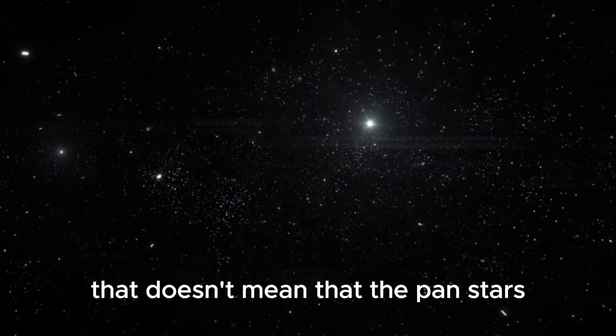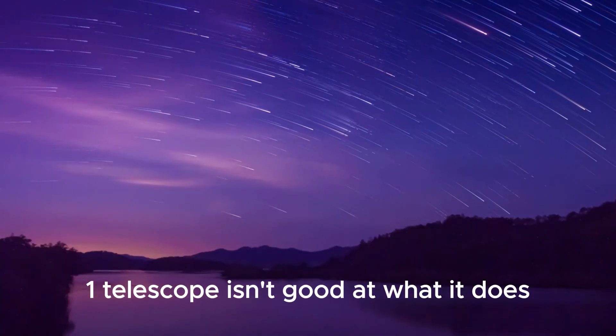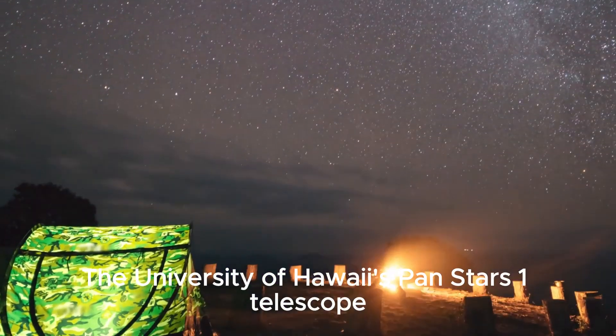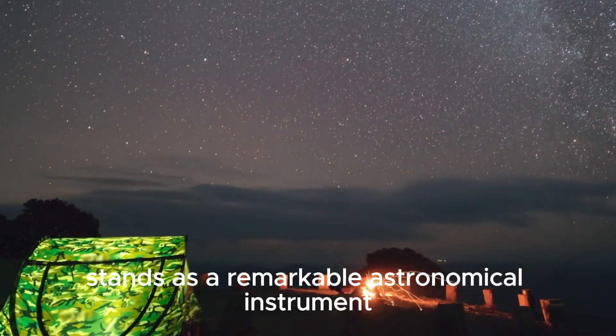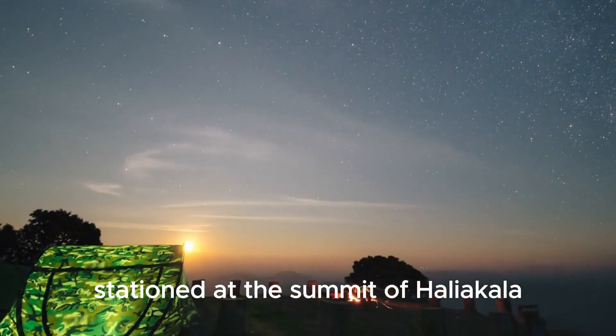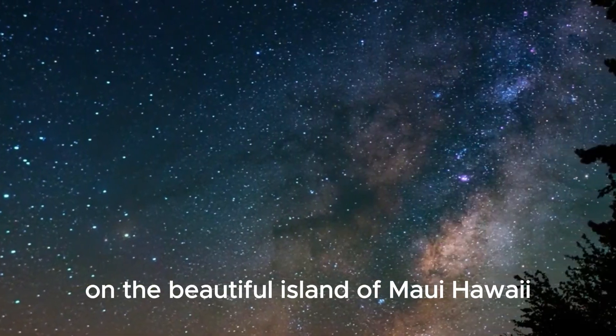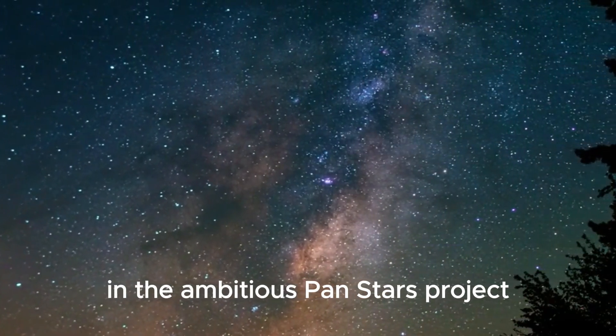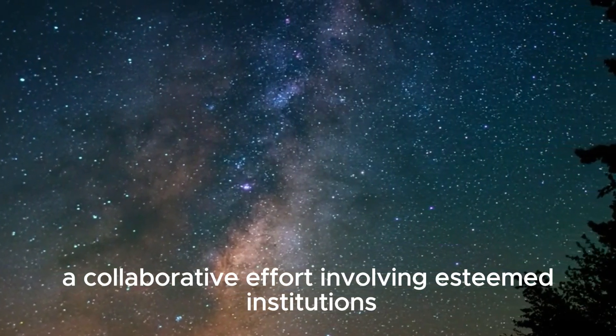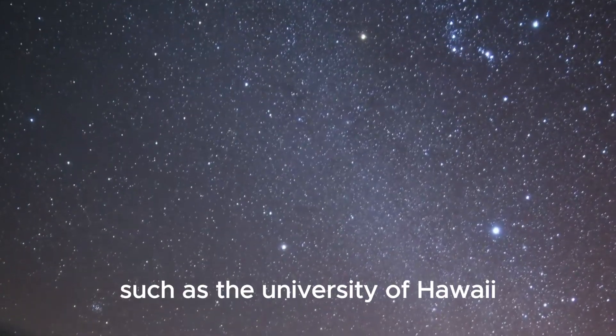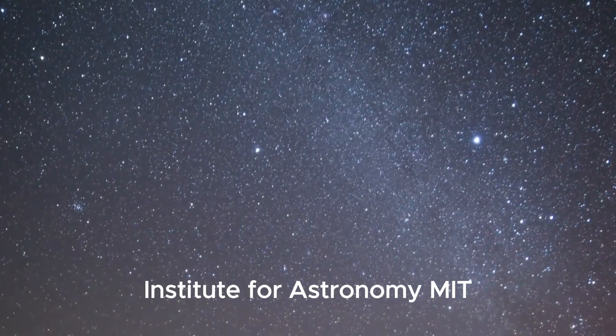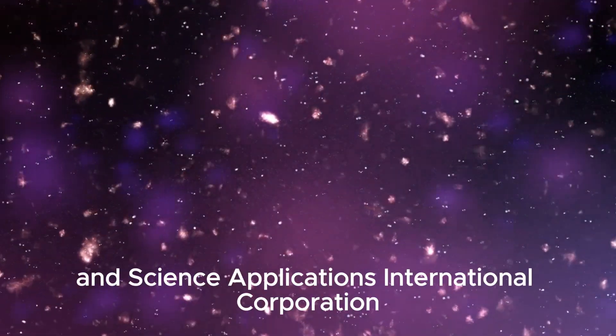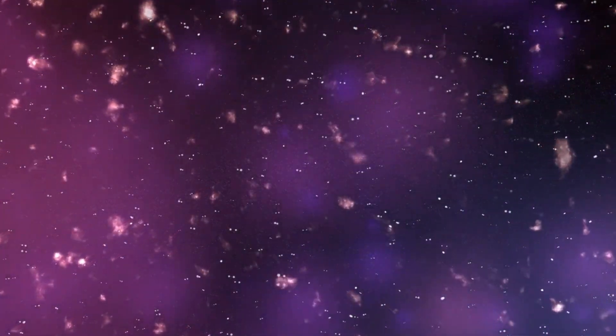That doesn't mean that the Pan-STARRS-1 Telescope isn't good at what it does. It's just that the two are fairly different. The University of Hawaii's Pan-STARRS-1 Telescope stands as a remarkable astronomical instrument stationed at the summit of Haleakala on the beautiful island of Maui, Hawaii. With its 1.8 meter diameter, this telescope plays a vital role in the ambitious Pan-STARRS project, a collaborative effort involving esteemed institutions such as the University of Hawaii Institute for Astronomy, MIT Lincoln Laboratory, Maui High Performance Computing Center, and Science Applications International Corporation.